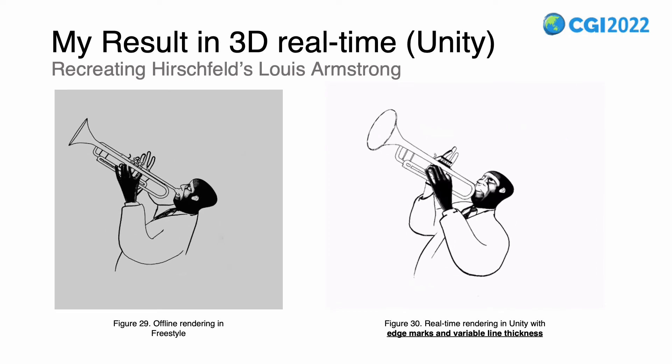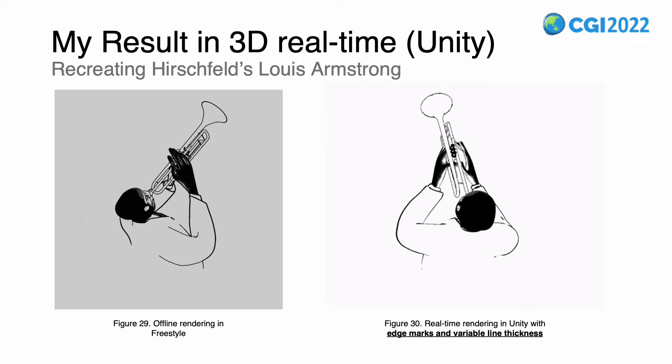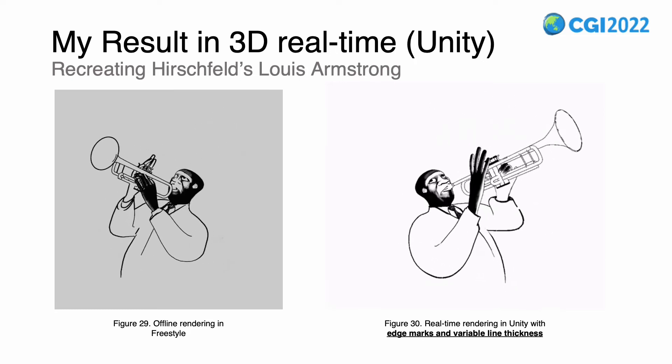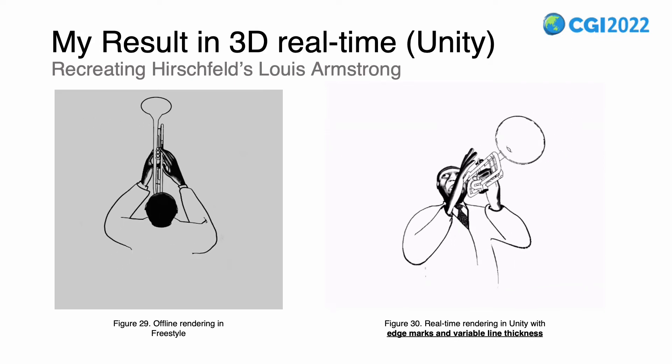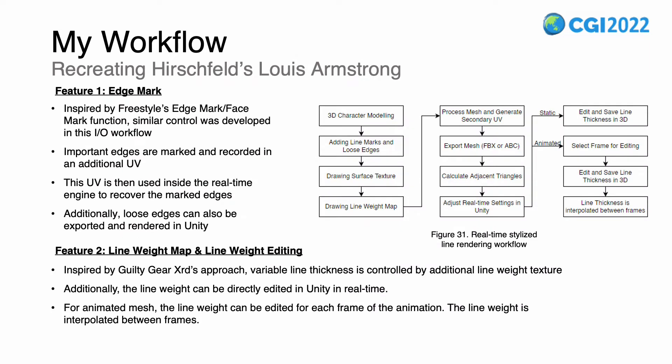This is a showcase of the result of our real-time workflow in Unity, shown on the right, compared to the offline result rendered in Blender Freestyle, shown on the left. Our workflow focuses on the implementation of two features in 3D real-time. The first is the edge mark feature, inspired by Freestyle's edge mark and face mark function — a similar control was developed in our input and output workflow. Important edges are marked and recorded in an additional UV channel, which is then used inside the real-time engine to recover the marked edges. Additionally, loose edges can also be exported and rendered in Unity.